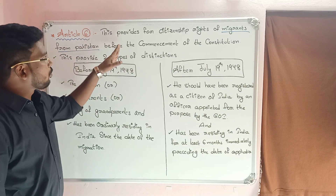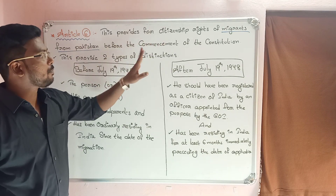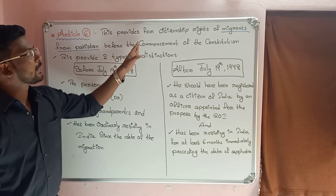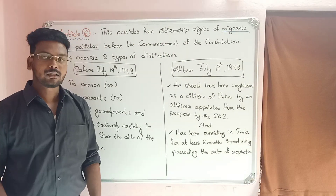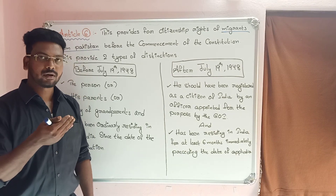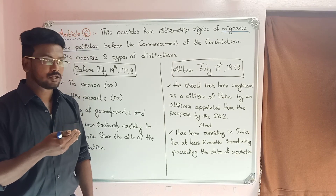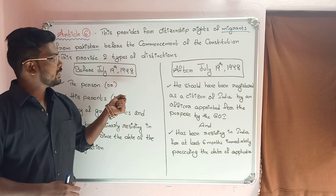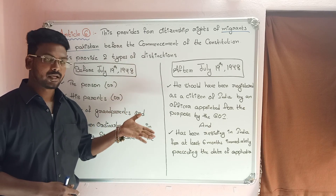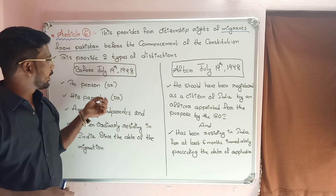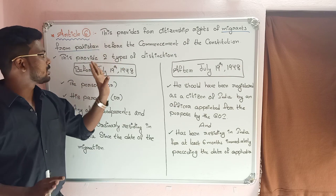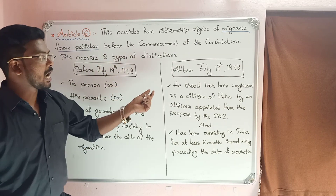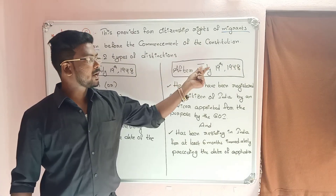Article 6 provides citizenship rights of migrants from Pakistan before the commencement of the Constitution. It provides two types based on the date of migration: before July 1948, and after July 1948.